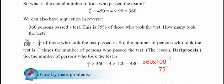Now, we have 360 equals 100 × 75. We need to make a small rotation since we have 100 divided by 75, and 75 equals 25.